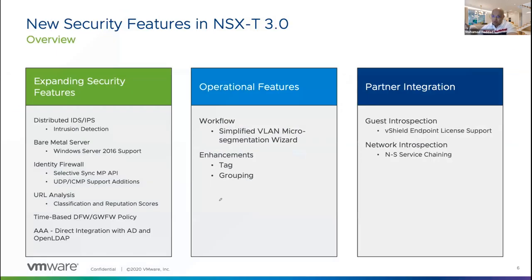The major security feature in 3.0 is IDS. We have distributed firewalling, and now we're adding IDS capabilities. NSX-T 3.0 will be IDS only; IPS comes in a future release. The reason we're adding this is to lock down lateral scanning and lateral attacks within the same segment. With distributed firewalling you can block certain traffic, but if port 80 is allowed within a web server environment, an attacker can exploit a zero-day attack using that port to start scanning and lateral movement — which IDS/IPS will help detect and block.